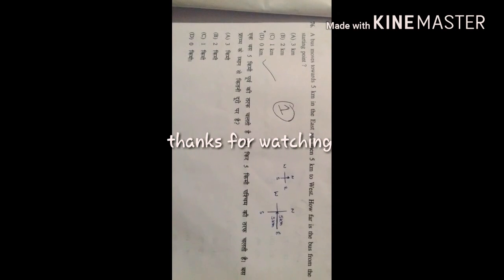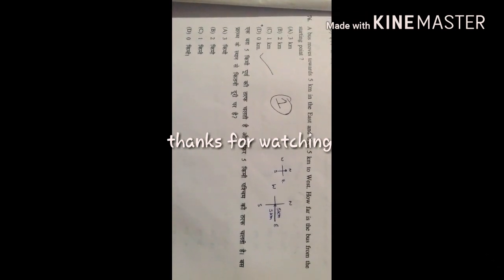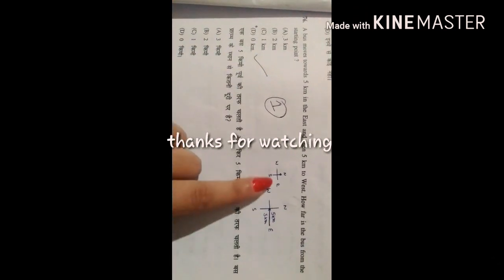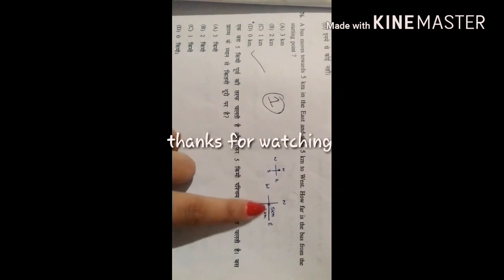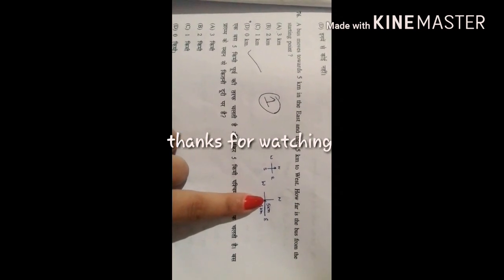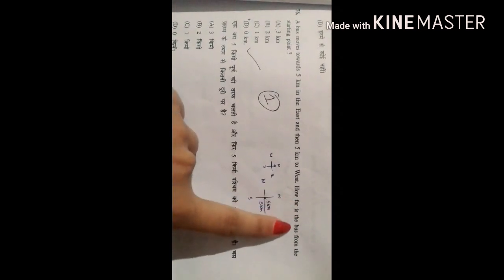Question number 76. The correct answer is 0 kilometer because the movement towards east and then again towards west. So the person will be 0 kilometer far from the starting point.